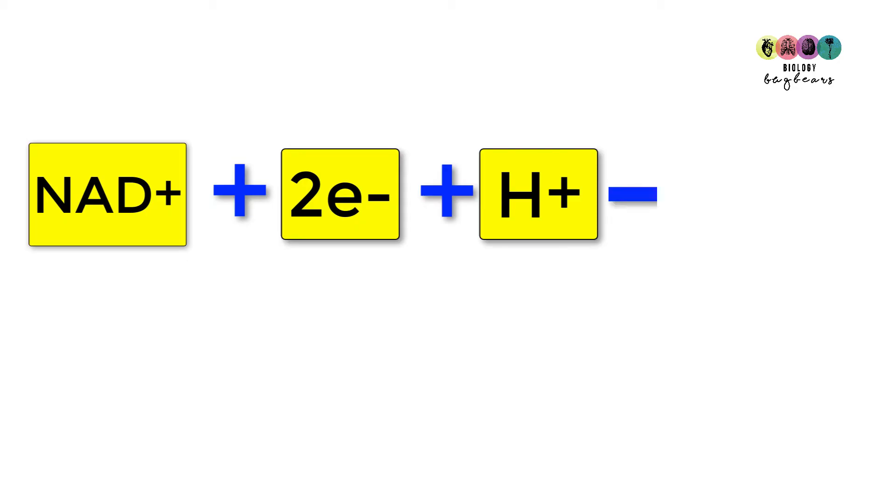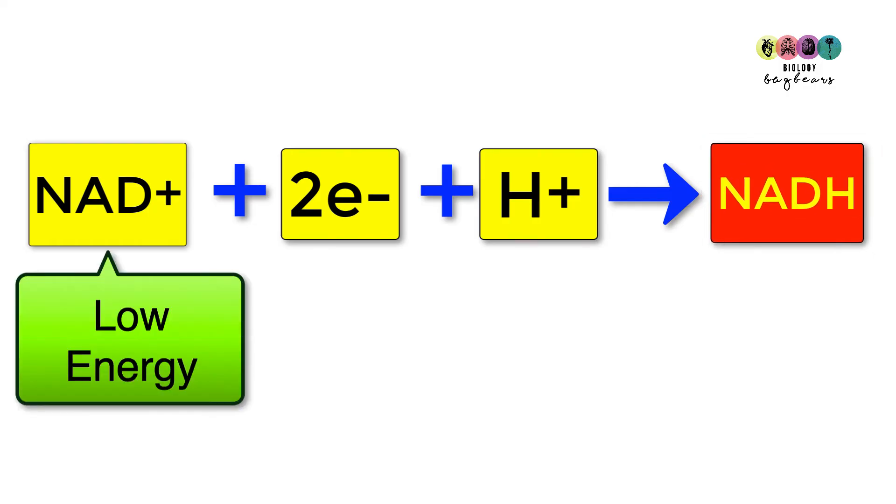So the details of this reaction are NAD+ will trap two electrons and one proton. Remember, they're coming from hydrogen atoms, and so is converted or is reduced to NADH. And when you compare NAD+ with NADH, we consider NAD+ to be a low energy molecule and NADH to be high energy.